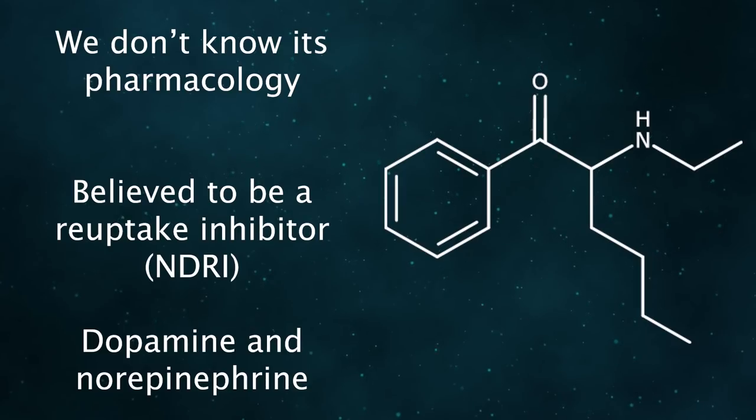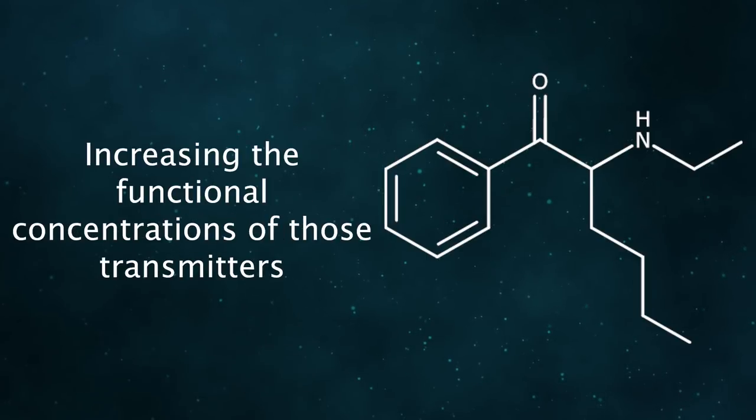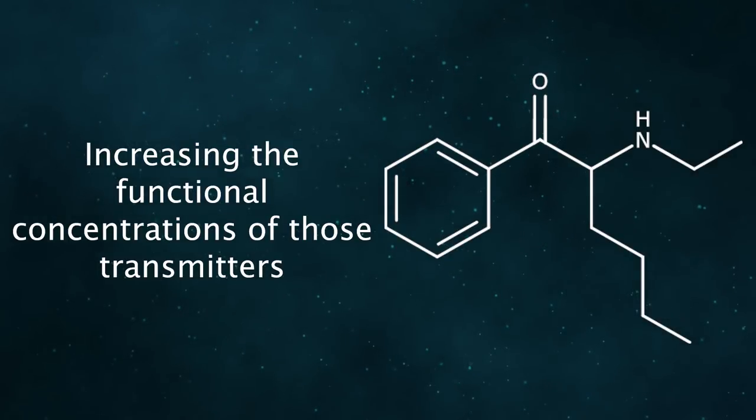Because it hasn't been studied, we don't know how the drug is functioning. Given its effects and structure, the common belief is that it's a reuptake inhibitor for dopamine and norepinephrine. It increases the functional concentrations of those neurotransmitters by preventing them from re-entering the presynaptic cell.